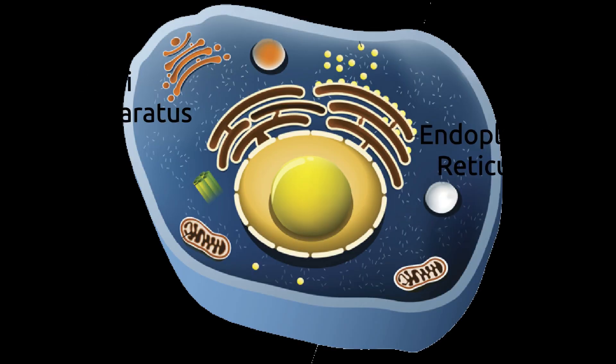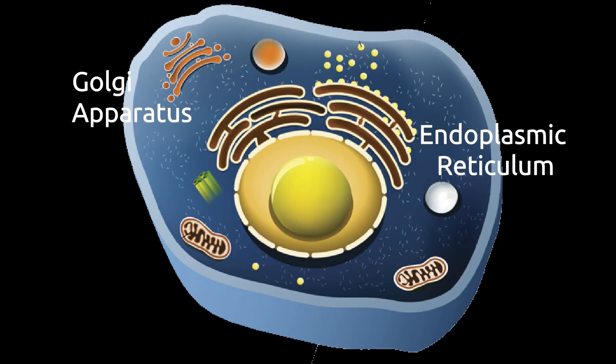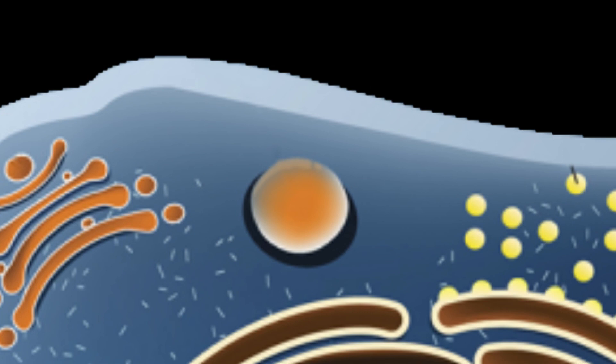Lysosomes originate either from the Golgi apparatus or directly from the endoplasmic reticulum. Each lysosome is of a rounded structure and is filled with dense material.